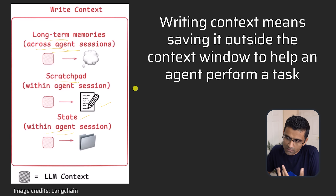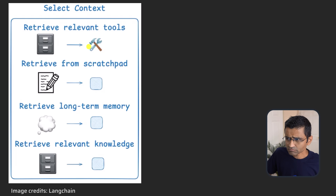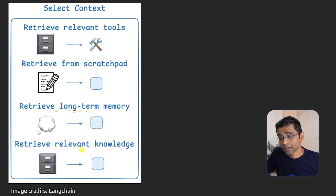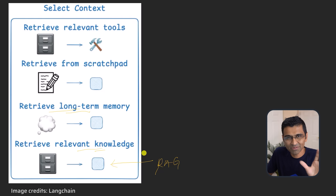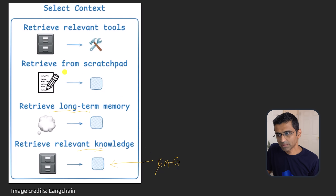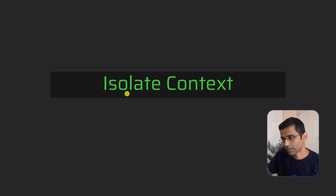Once you've saved this information, the next step is retrieving it — called selecting the context. You can retrieve from long-term memory, like the ChatGPT example, or retrieve relevant knowledge through RAG, where you pull from a vector database and pass the necessary context to the LLM. You can also retrieve from a scratchpad or from relevant tool calls. That is the second strategy: selecting the right context in an efficient manner.